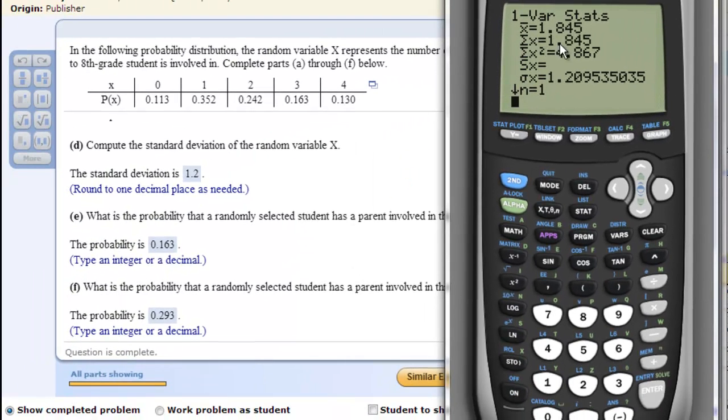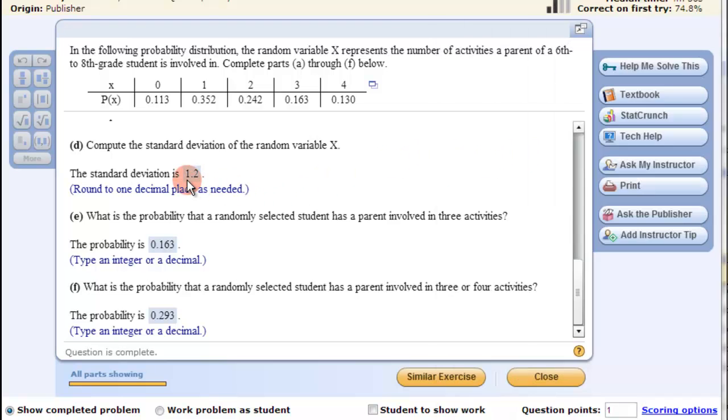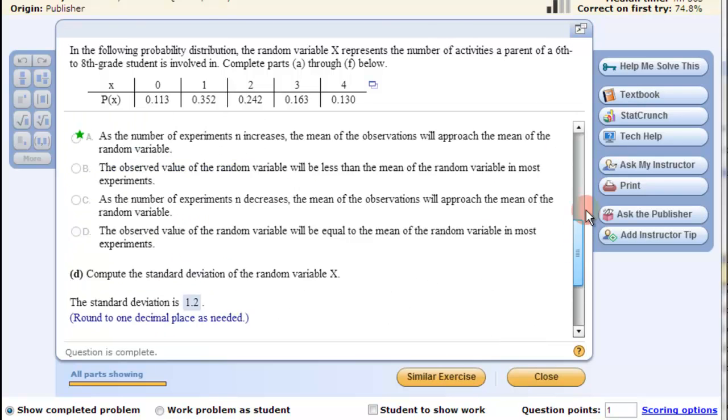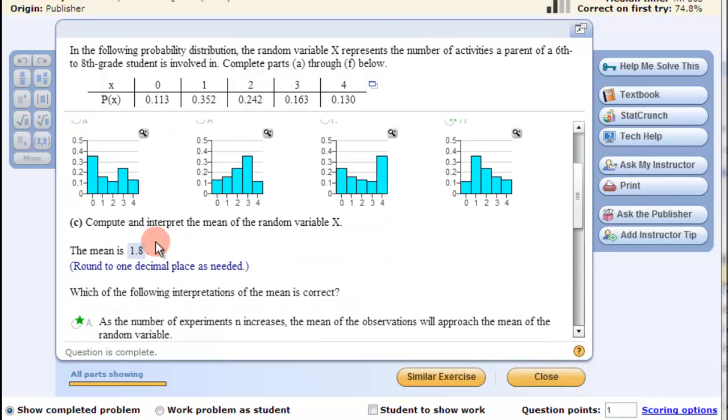Now 1.8 is the mean and 1.2 is the standard deviation. There's the standard deviation of 1.2 and the mean is up here of 1.8. So that's how you compute on a TI calculator.